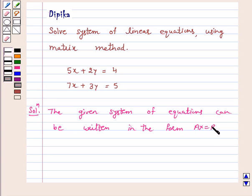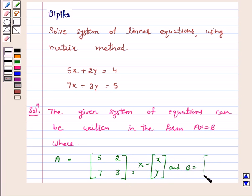AX is equal to B where A is equal to the matrix [5, 2; 7, 3], X is equal to [x; y], and B is equal to [4; 5].